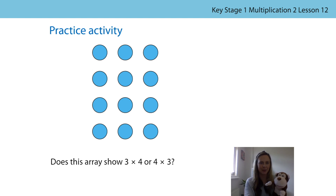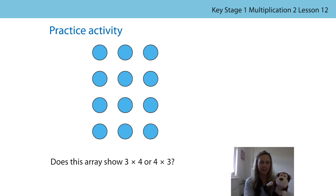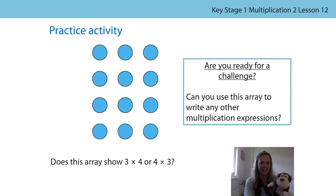We've got a practice activity for you now. You can see there is an array of counters — have a think about whether this array shows three times four or four times three. You might want to circle the counters into equal groups to help you see which expression the array represents. It might represent both expressions. For a challenge: can you use this array to write any other multiplication expressions by circling the counters in as many different ways as possible? We hope you have fun. Bye!